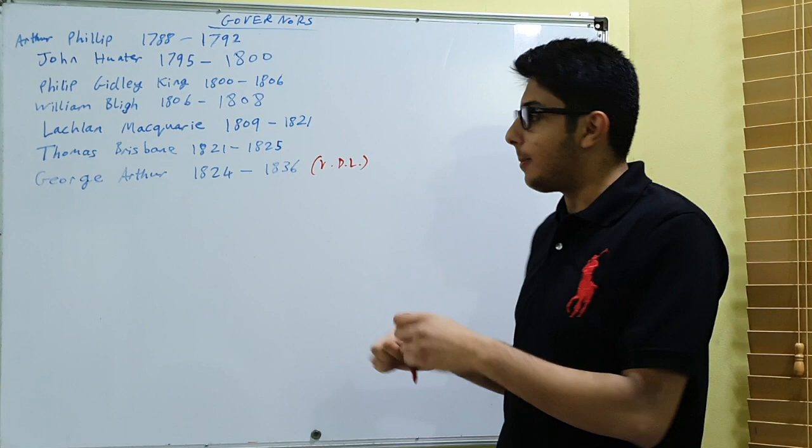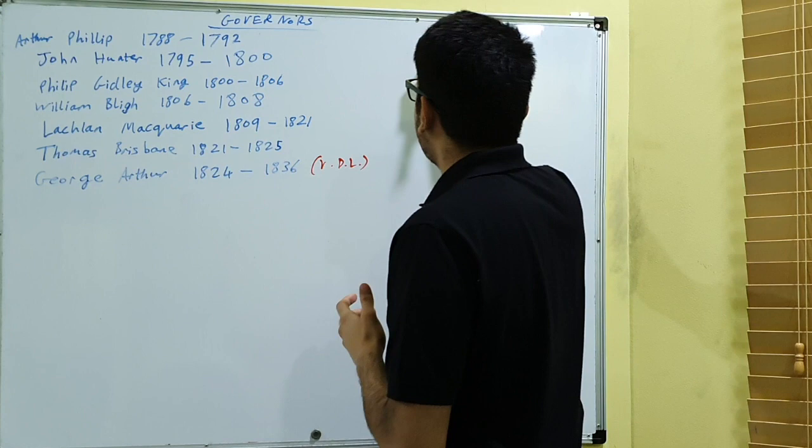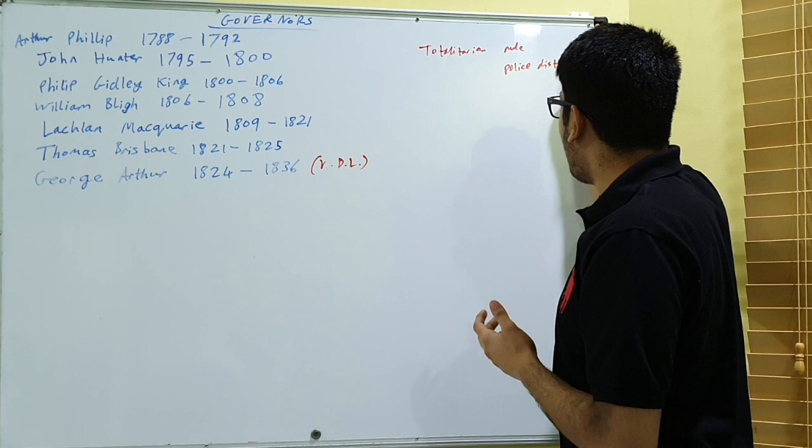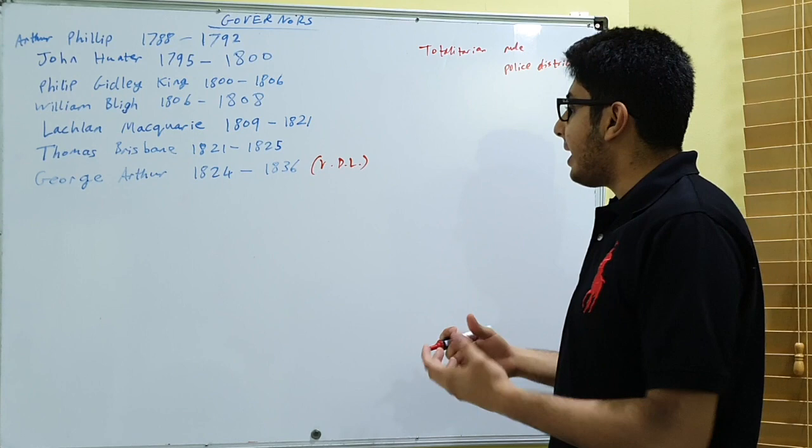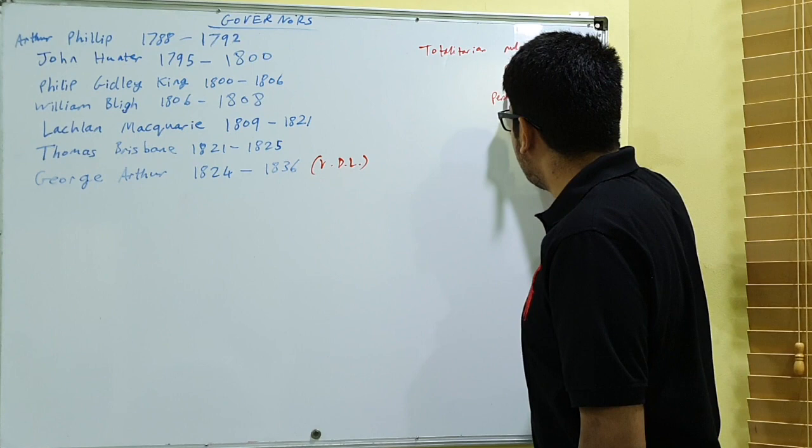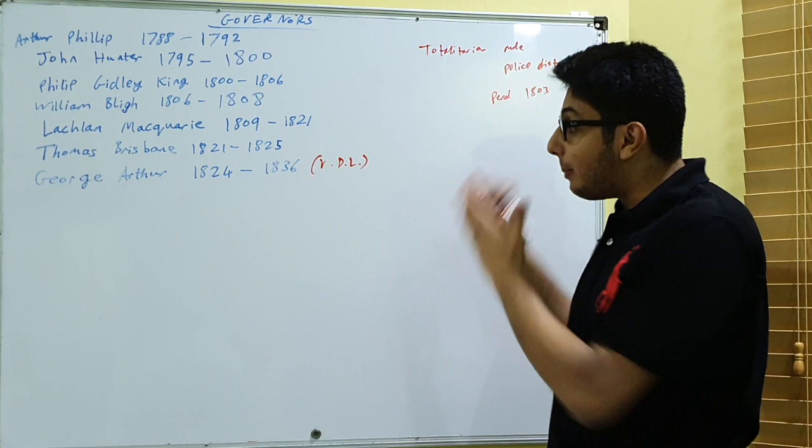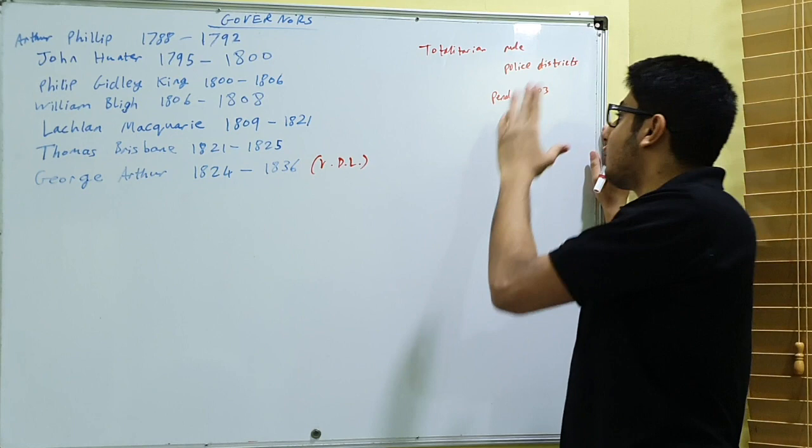So this guy had a very totalitarian rule. He divided the area into police districts and unlike Macquarie and Philip, he was not lenient with the convicts. In Van Diemen's Land it was established as a penal colony in 1803 and basically it was the prison within the prison because Australia was the penal colony and they had another penal colony in Tasmania. So that's where they sent the worst offenders.